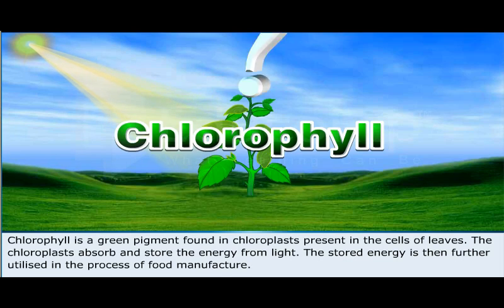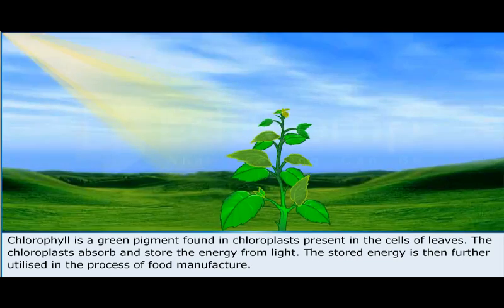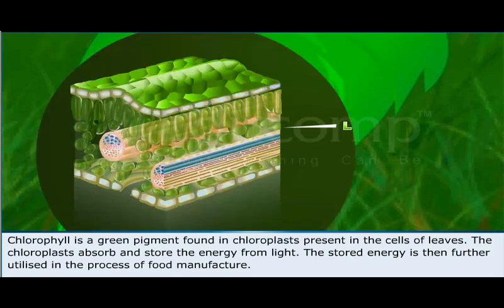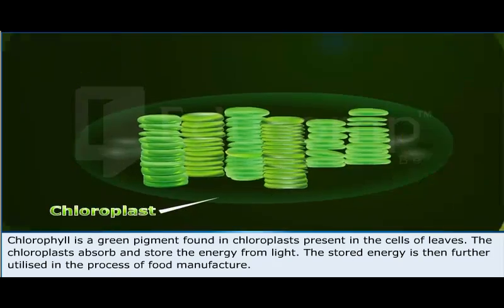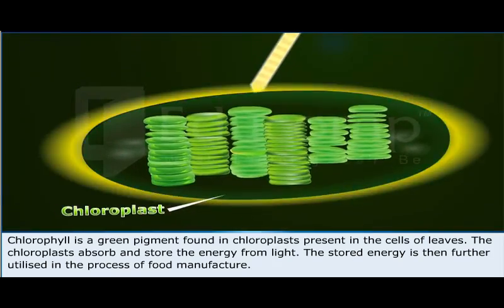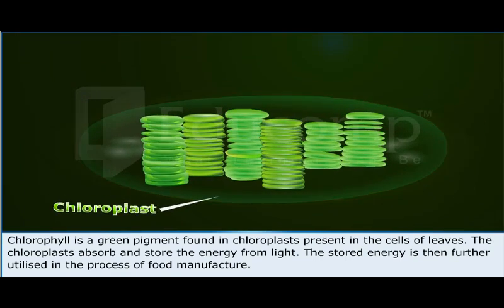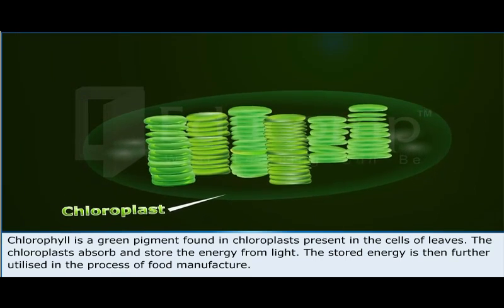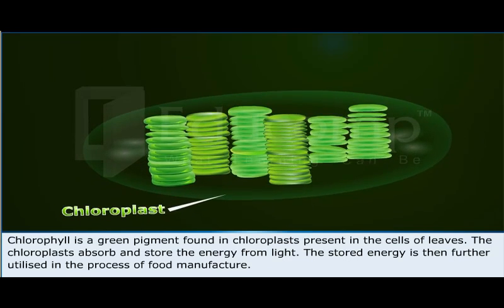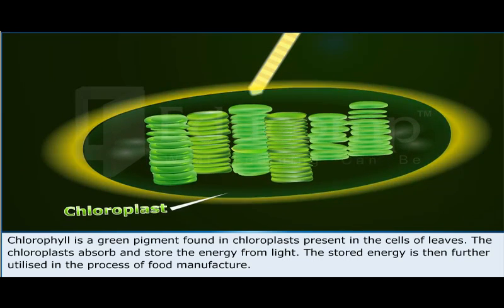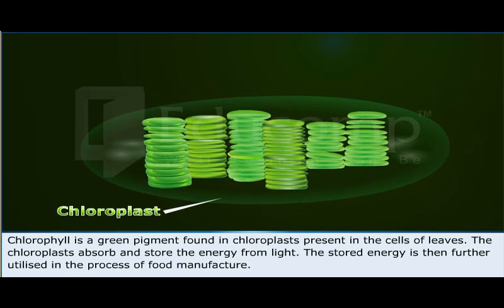Chlorophyll is a green pigment found in chloroplasts present in the cells of leaves. The chloroplasts absorb and store the energy from light. The stored energy is then further utilized in the process of food manufacture.